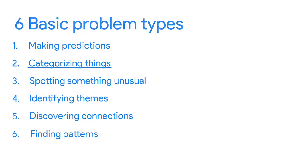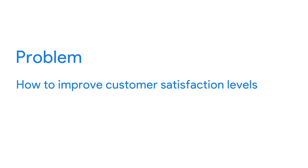Now let's think about the second problem type: categorizing things. Let's say a business wants to improve its customer satisfaction levels. Data analysts could review recorded calls to the company's customer service department and evaluate the satisfaction level of each caller. They could identify certain keywords or phrases that come up during the phone calls and assign them to categories such as politeness, satisfaction, dissatisfaction, and empathy. Categorizing these keywords gives the company data to identify top performing customer service representatives and those who might need more training, leading to happier customers and higher service scores.